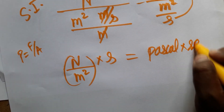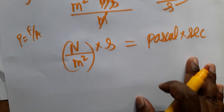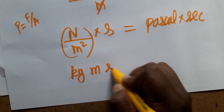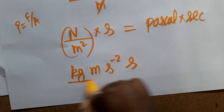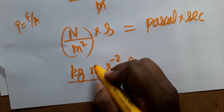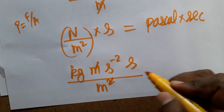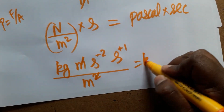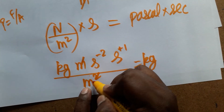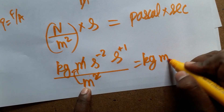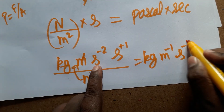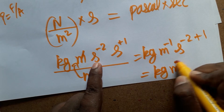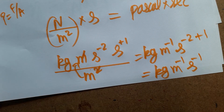Substituting Newton as kg·m·s⁻², we get: kg·m·s⁻² times second divided by meter squared. Meter cancels one power, and combining the second terms: s⁻²⁺¹ = s⁻¹. So the final SI unit of coefficient of viscosity is kg·m⁻¹·s⁻¹.